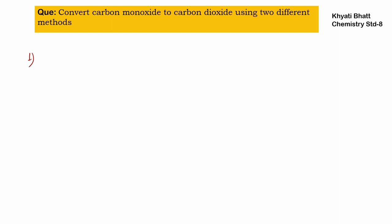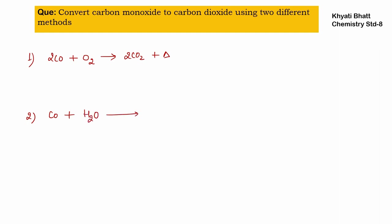Two methods to convert carbon monoxide to carbon dioxide: first, burning CO with oxygen produces CO2 and liberates heat. Second, carbon monoxide reacts with steam at 450°C with Fe2O3 as catalyst to produce CO2 and hydrogen gas.